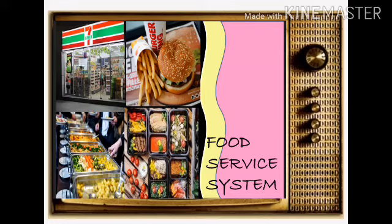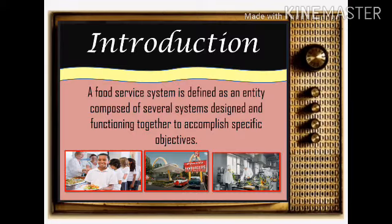The first thing we need to know is the meaning. Food Service System is defined as an entity composed of several systems designed and functioning together to accomplish specific objectives. Food Service System is a provision of food and drink ready for consumption away from home or work.